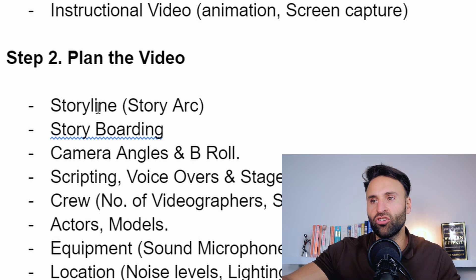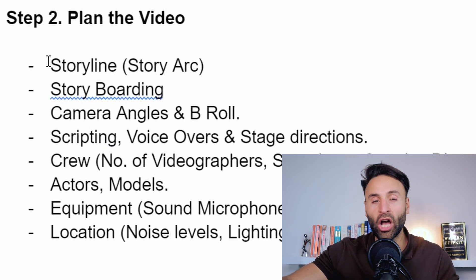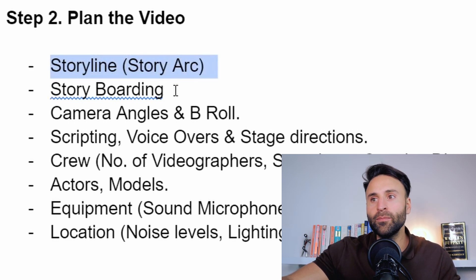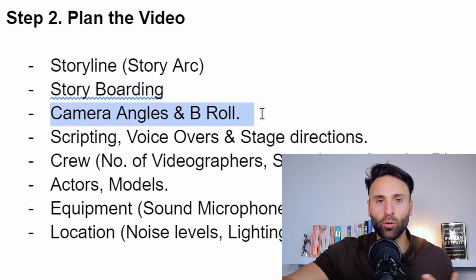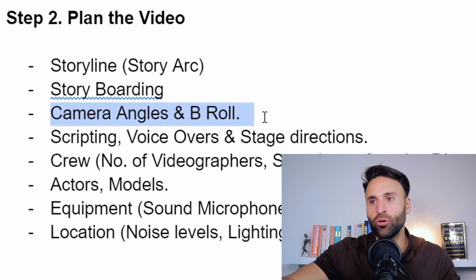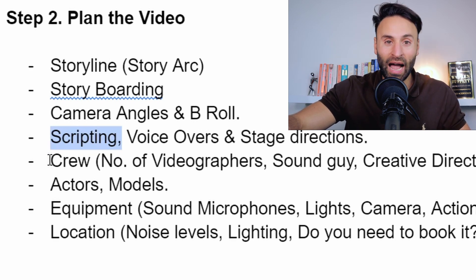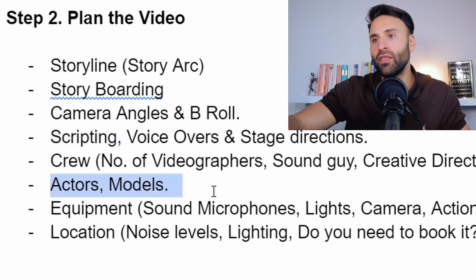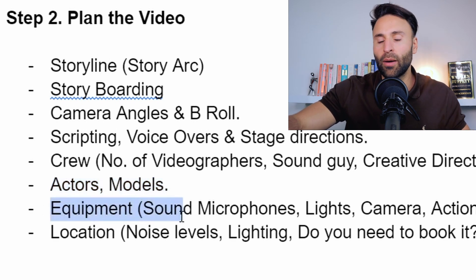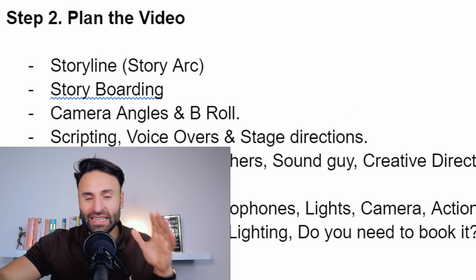In this video I'm really going to elaborate on the movie style video and go over how to best plan and execute one. We first define the storyline or story arc, then storyboarding, then analyze camera angles to provoke certain emotions and capture B-roll. Then we do scripting, voiceover, and stage directions. We think about crew — how many videographers, sound operators, creative directors — then actors, models, and presenters. We also consider equipment: microphones, lights, cameras, location noise levels and lighting, access to the location, and coordinating dates and times.